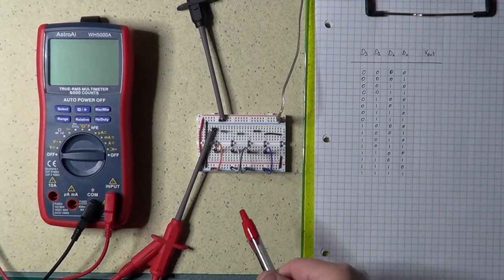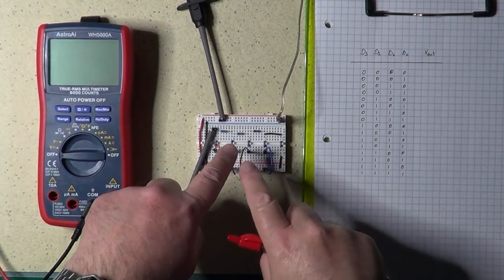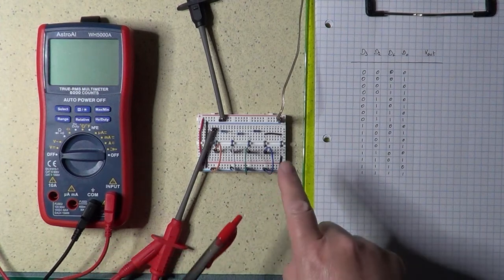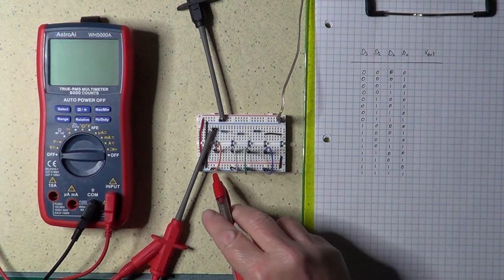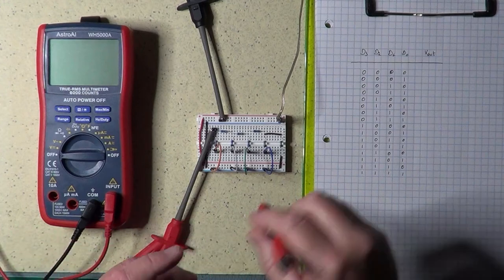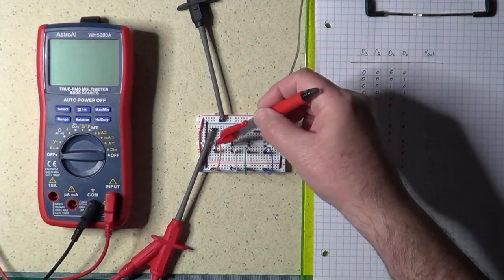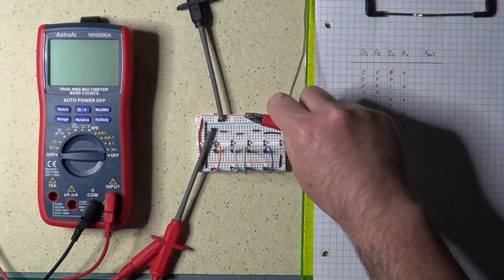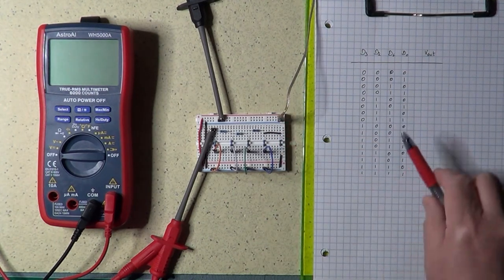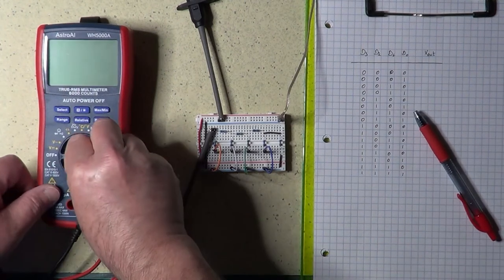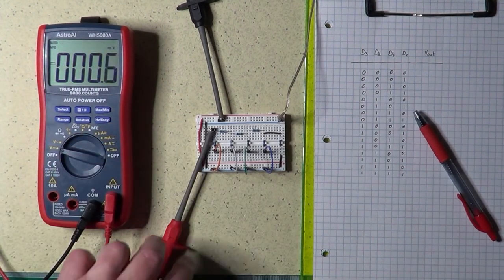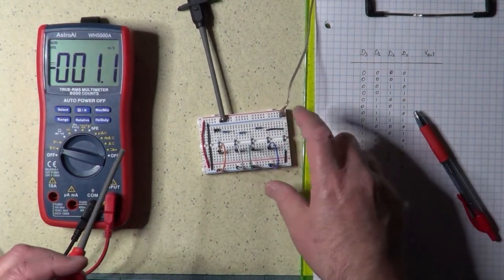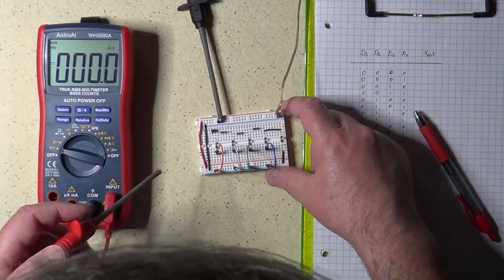Okay, this is a 4-bit DAC. These 4 wires are the 4 bits, D0, D1, D2, and D3. Right now they are connected to ground. And here are the resistors, the R resistors, and the 2R resistors. The circuit is already powered up with a voltage of 5 volts. Let's take a look now. So, first of all, let's check if we really have 5 volts available.